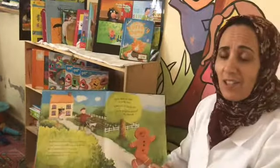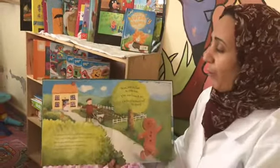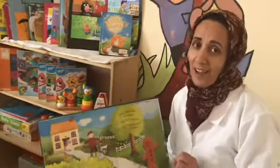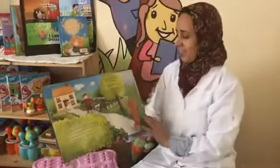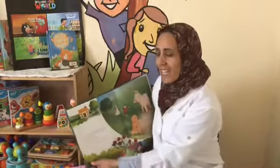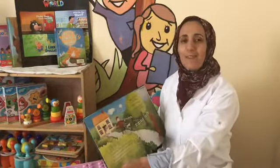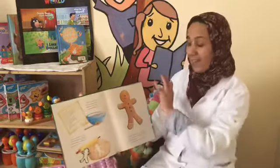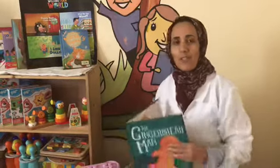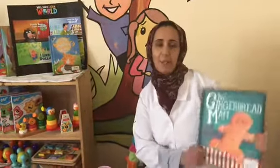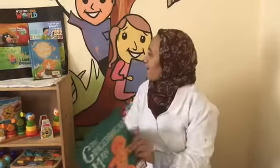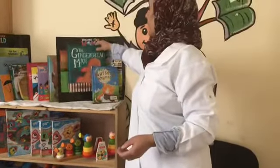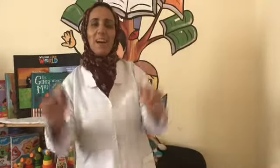We'll see next week if the old woman and the old man can catch the gingerbread man or not, or if he's going to keep running until he reaches somewhere else. This is what we're going to see next week. Today I read for you the first part of the story with the old woman, the old man, and the gingerbread man. Next week we're going to finish this story. Hope you liked it — I love this book. I will give you a meeting for next week to finish this story. I love you. Bye, bye.